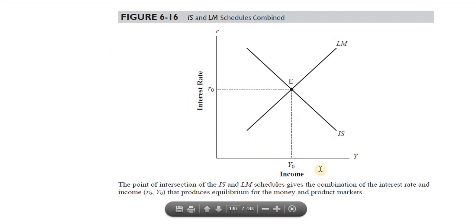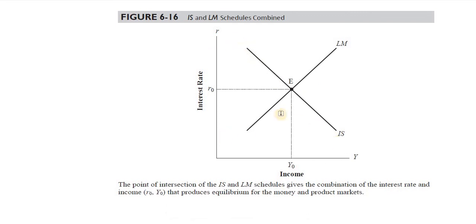The last point is how equilibrium in the goods market and the money market is simultaneously established. The IS curve and the LM curve interact, and their intersection determines simultaneous equilibrium in both the goods market and the money market. From this we can simultaneously determine the rate of interest and the income level in the economy — that is the IS-LM model.